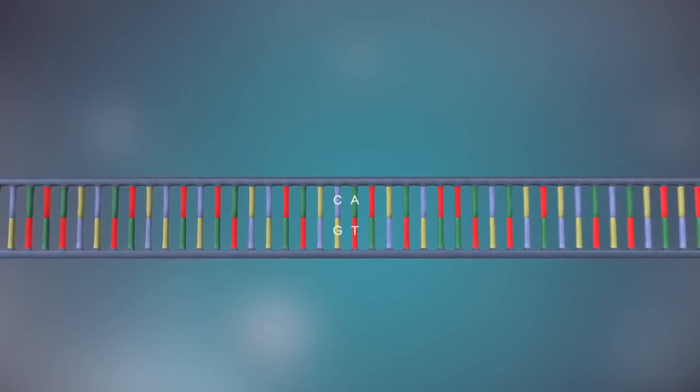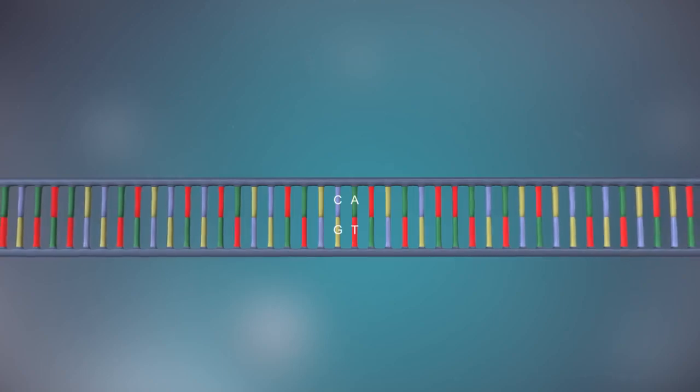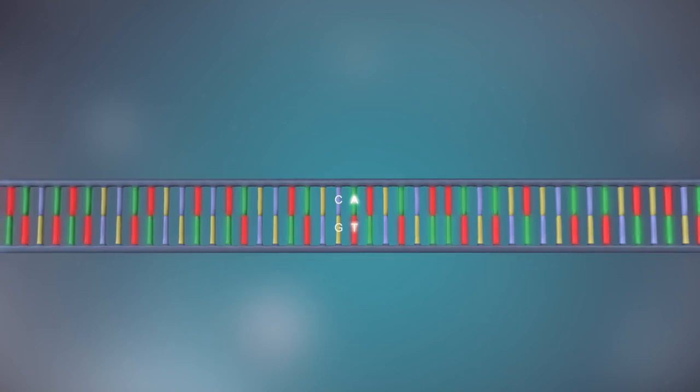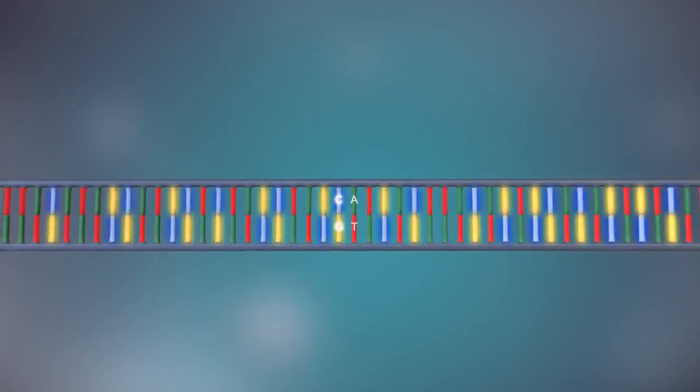The two strands are complementary. This means that wherever there's a T in one strand, there will be an A in the opposite strand, and wherever there's a C, there will be a G in the other strand.